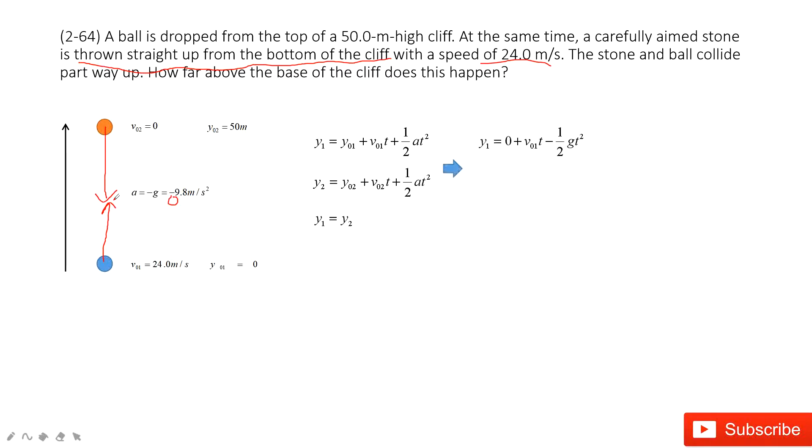Then we input the known quantities. The initial position for object one is zero. Initial position for object two is 50 meters. And y1 must equal y2. So we can get this term equal to this term. So one half gt square can be dropped out.